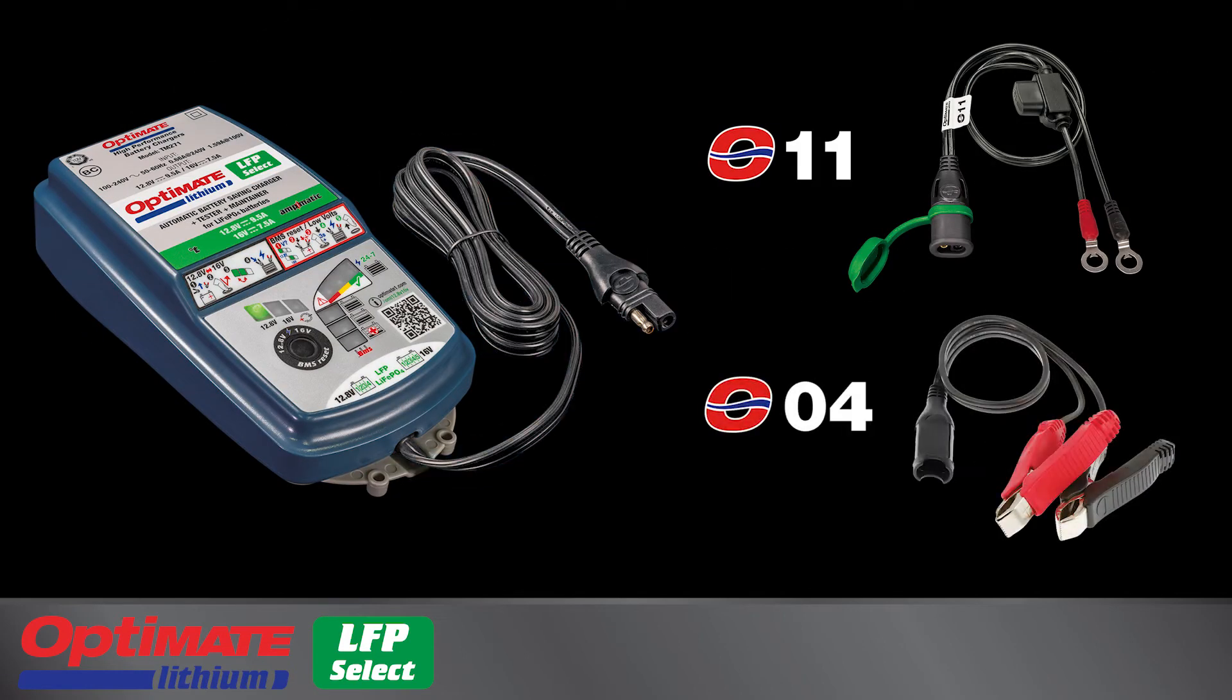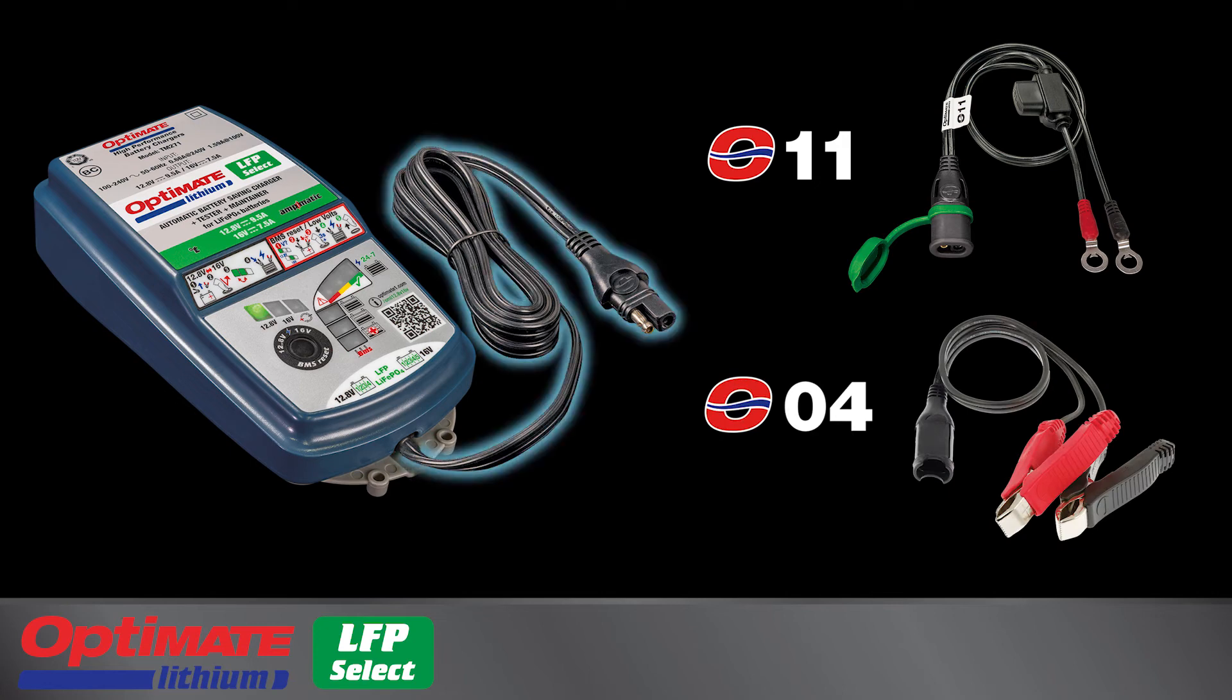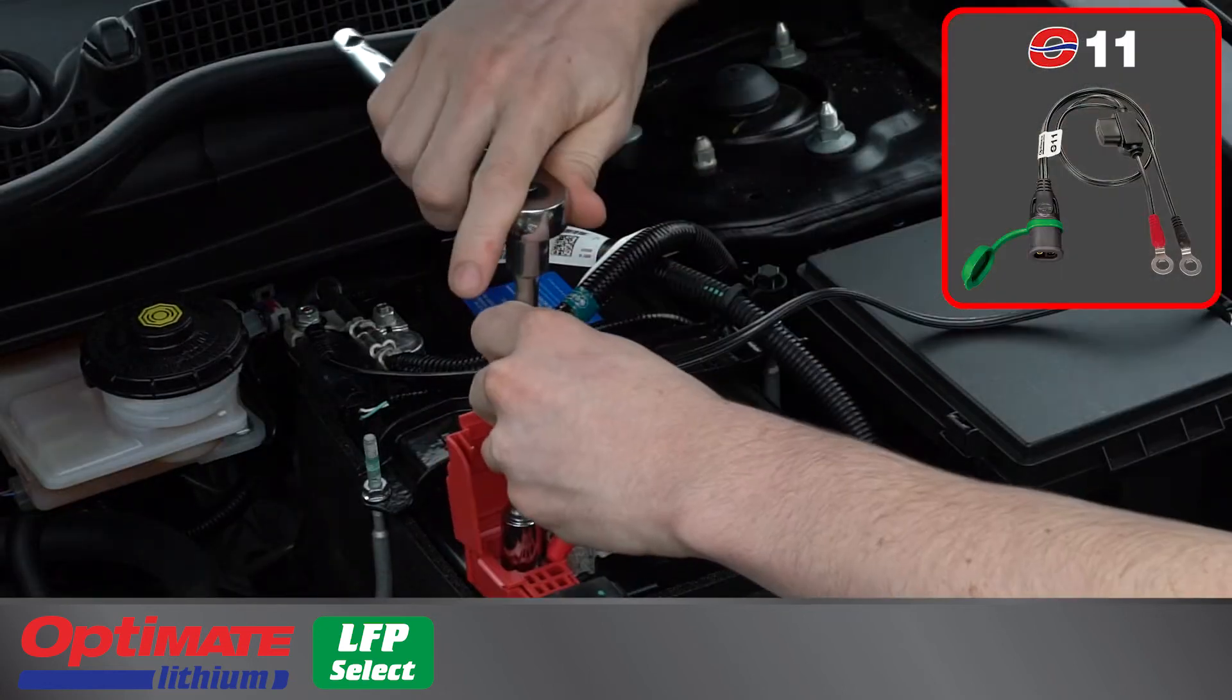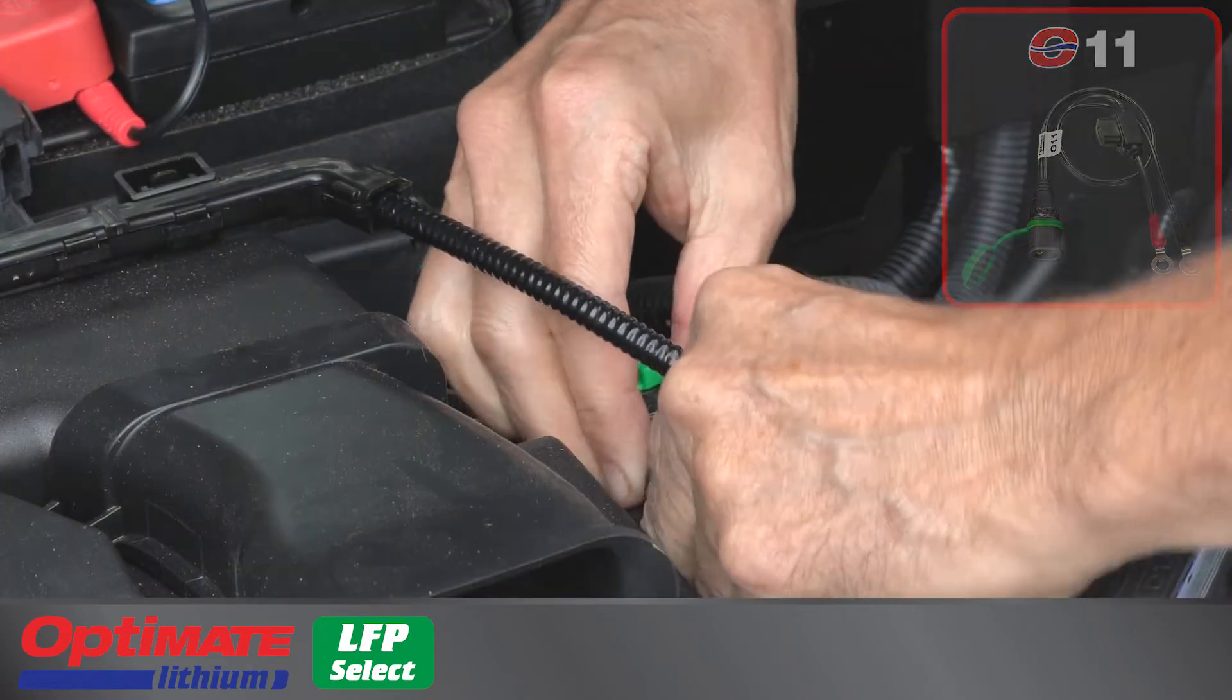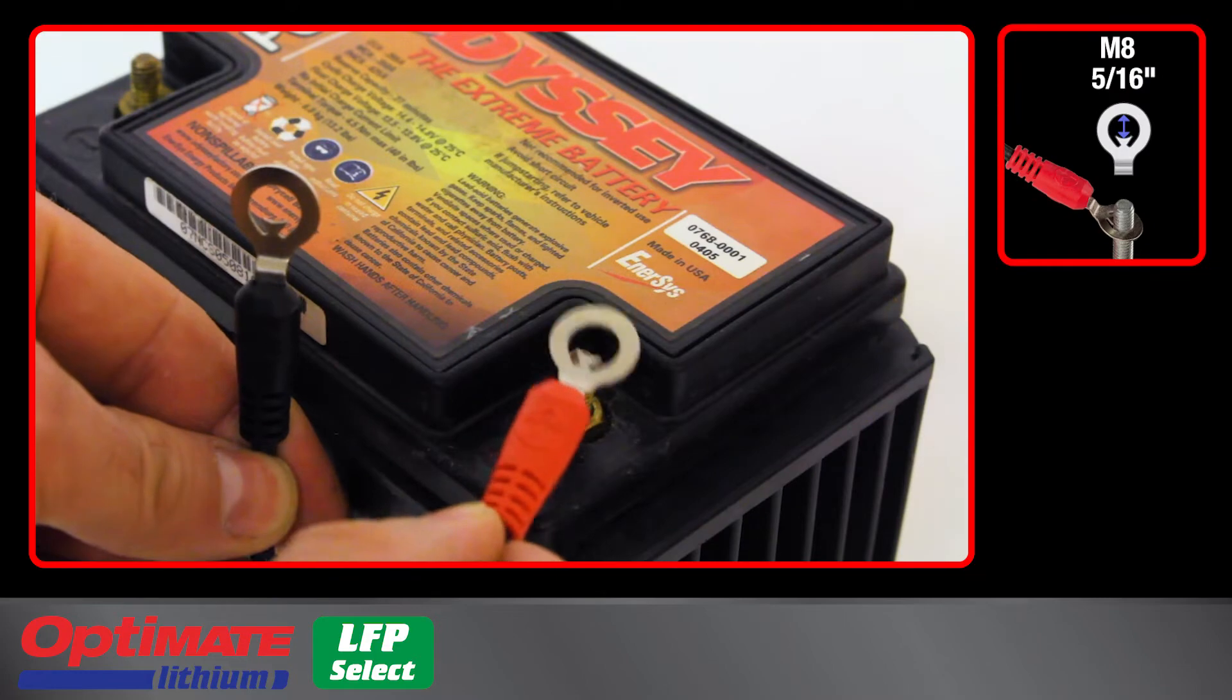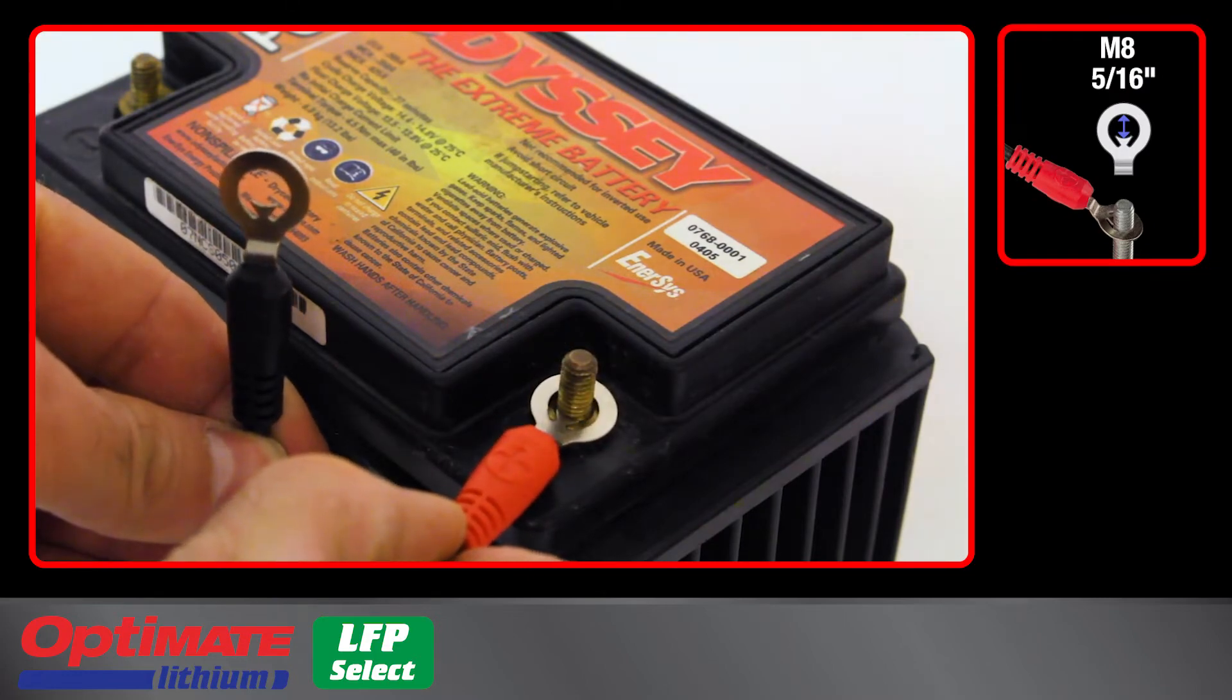The charge cable connects to the battery with these included accessories. The O11 battery lead creates a quick connect charging point directly on the battery. The dual rings can be adjusted to fit different sized battery posts.